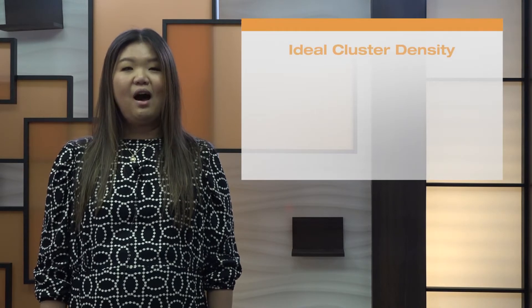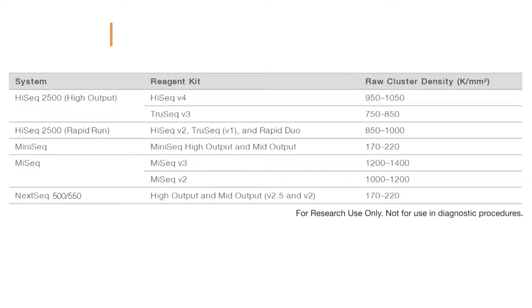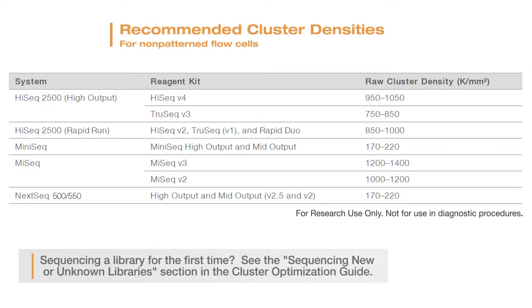Thanks, Tim. Performing a run at optimal cluster density involves finding a balance between under clustering and over clustering. Ideally, we want to sequence at a high enough density to maximize total data output while maintaining a low enough density to avoid over clustering. Illumina has recommended target densities for non-patterned flow cells. Raw cluster density is displayed in thousands of clusters per square millimeter and measures how many clusters are identified on the flow cell, regardless of whether they pass quality filter. Now let's discuss some common clustering issues and how to prevent them from decreasing data quality and yield.